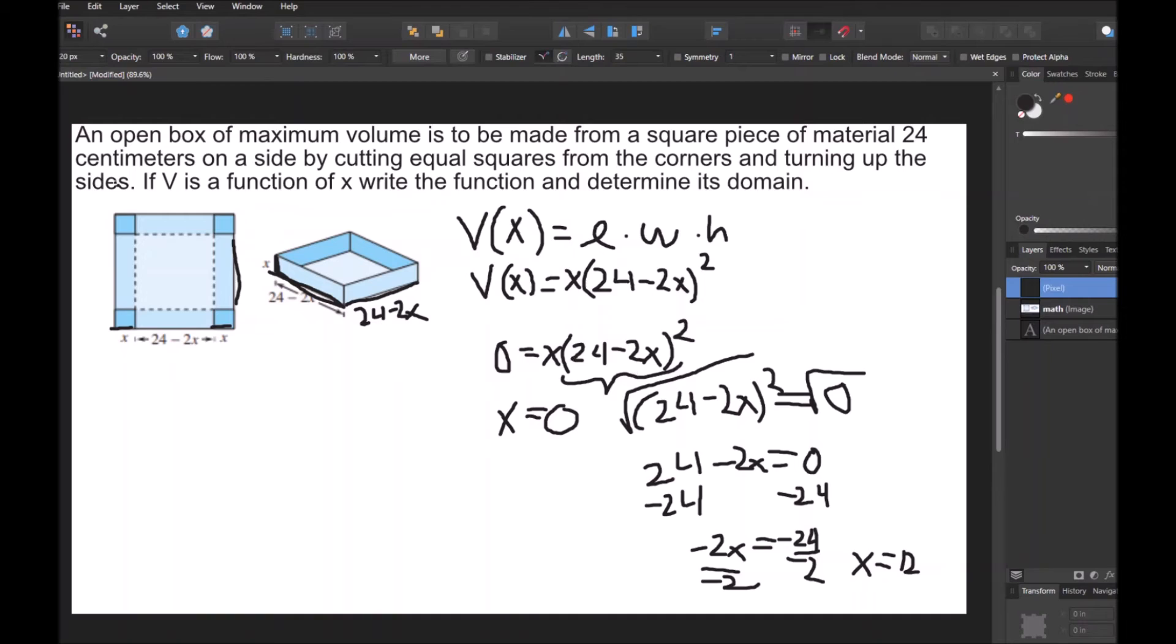And I don't think they give us... Oh, okay. They give us centimeters. So X has to be between 0 and 12 centimeters. Because if X is 0 centimeters, then the volume is 0, and that doesn't make sense. That's not possible. And if X is 12 centimeters, then the volume is also 0, and that wouldn't make sense either.